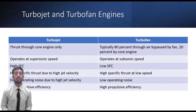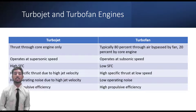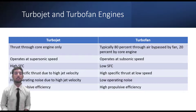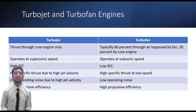Most supersonic fighters employ turbofans with afterburners to raise exhaust speed for a supersonic sprint. The turbofan, or fanjet, is a type of airbreathing jet engine widely used in aircraft propulsion. The word turbofan is a portmanteau of turbine and fan — the turbo portion refers to a gas turbine engine which achieves mechanical energy from combustion, and the fan is a ducted fan that uses that mechanical energy to accelerate air rearward. Whereas all air taken in by a turbojet passes through the combustion chamber and turbines, in a turbofan some of that air bypasses these components. The ratio of mass flow of air bypassing the engine core to the mass flow through the core is referred to as the bypass ratio.